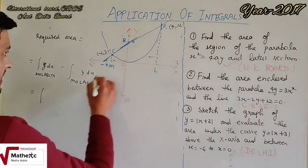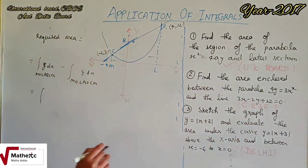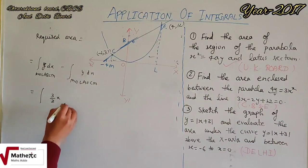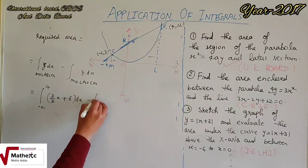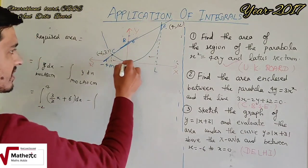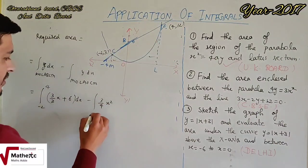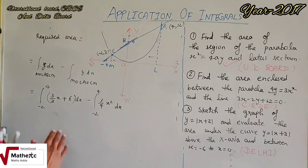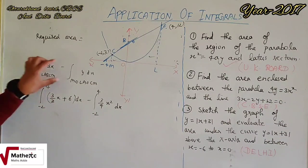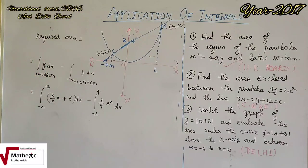Diagram में: straight line वाले region के लिए y = (3/2)x + 6, और x, -2 से 4 तक vary करता है। Parabola वाले portion में y = (3/4)x², और x की variation -2 से 4 है। दोनों का integration करके limit apply करने पर required area मिलेगा। Concept यह है: पूरे area से नीचे वाला area minus करना है, formula y dx।